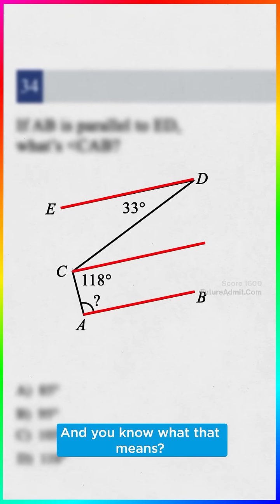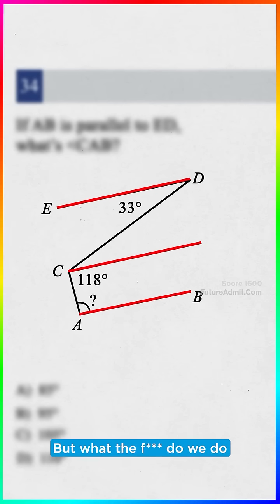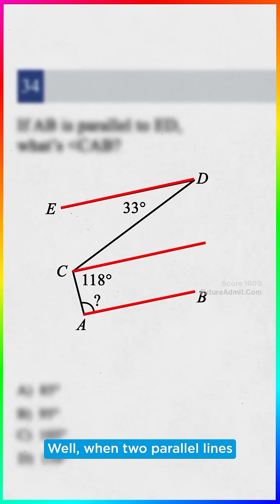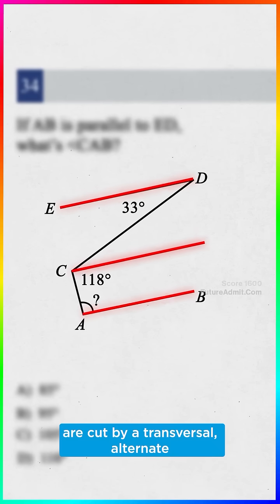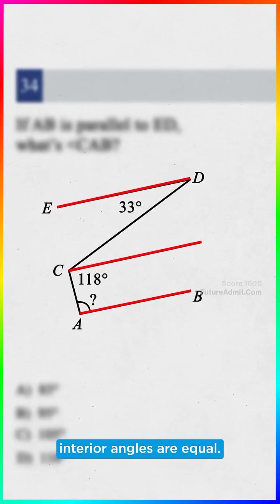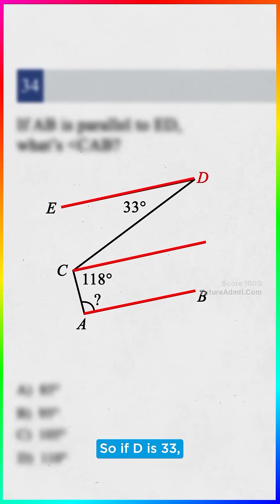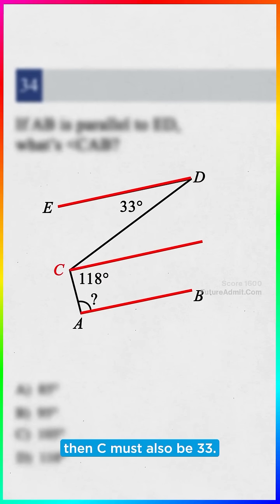And you know what that means? Well, we've got a transversal, but what do we do with that? Well, when two parallel lines are cut by a transversal, alternate interior angles are equal. So if D is 33, then C must also be 33.